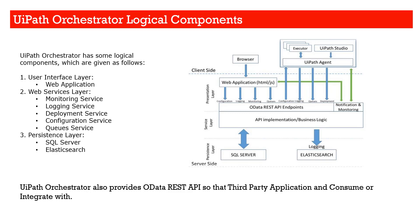In the persistence layer, we save data. It shows SQL Server here, but UiPath Orchestrator can work with AWS RDS and Azure databases as well. Any database that is SQL Server-compliant can be connected with UiPath Orchestrator — it could be SQL Server, RDS, or any other compatible database.